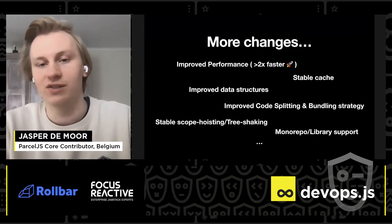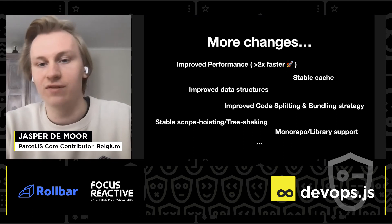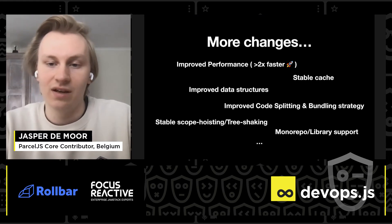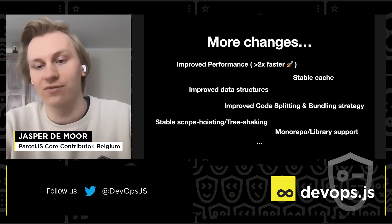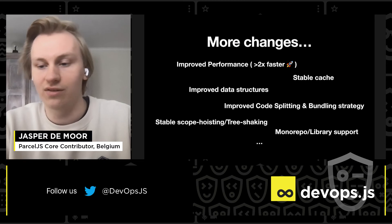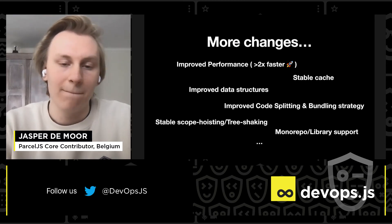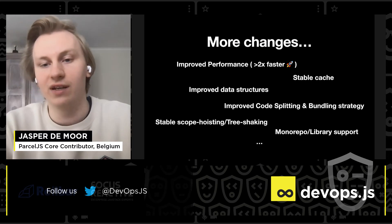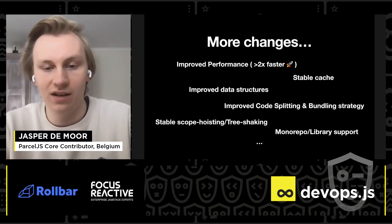We've also done a lot more changes beyond these highlights. We've improved performance by more than 2x. We've made our cache stable, so you don't have to remove it periodically — you can just leave it there. We've also improved our data structures to use way less memory, and this helped us scale to the size of companies like Atlassian.